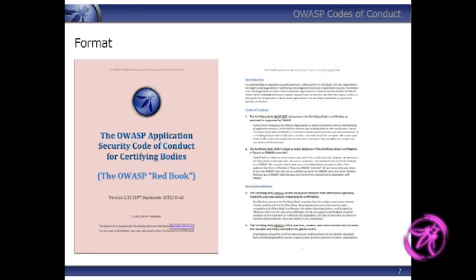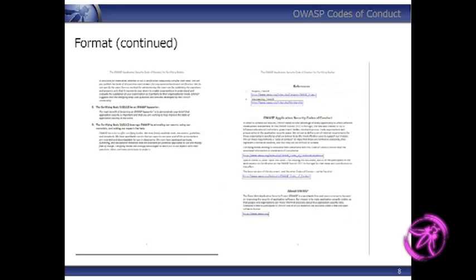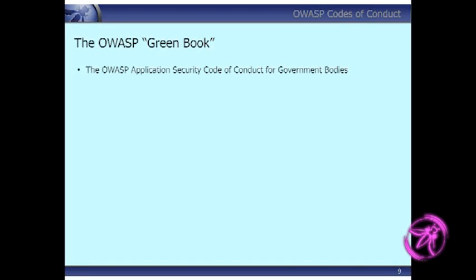So what's generally in them? There's a cover sheet. At the moment we're giving them colour names as shortcut identifiers — so the certifying bodies one is the Red Book, with a pinky tint really. The structure includes some introductory text, a small number — two, three, or four things — that are the mandatory parts of the code of conduct. Of course no one needs to do them; they're only mandatory if you adopt them. There are also other recommendations. On the back there are references about the codes of conduct and material about OWASP.